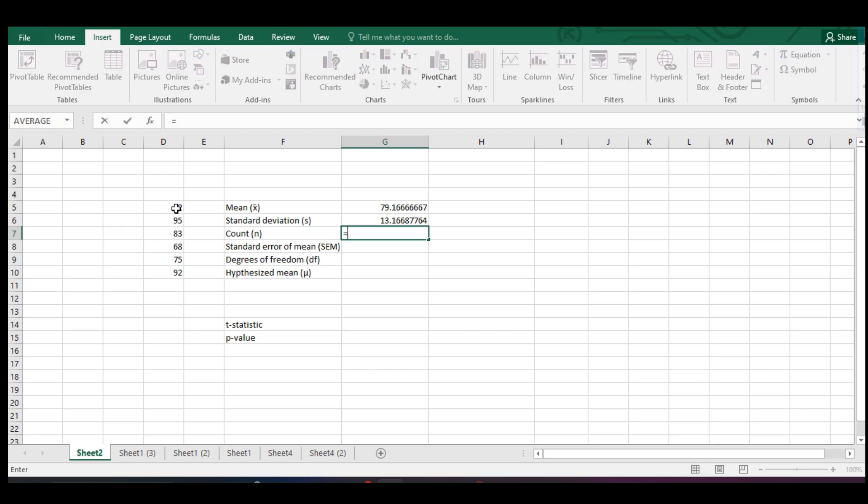Then we have our count. You can actually count that one if you've got a smaller data there, but if that is very large, then you can just use the count function and then select the data, and then close. Then we have the standard error that will be the standard deviation divided by the square root of the sample size. And then the degrees of freedom is simply the sample size minus 1.